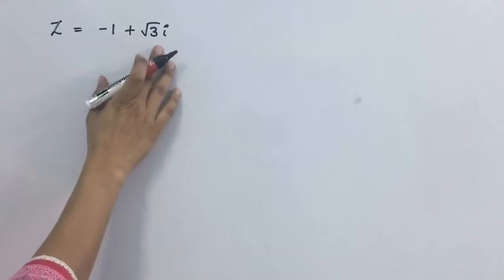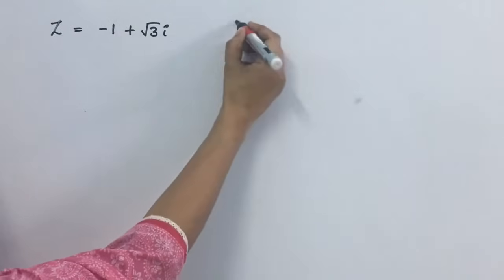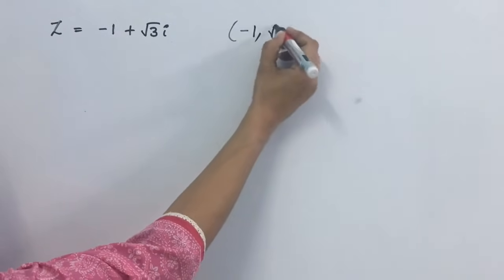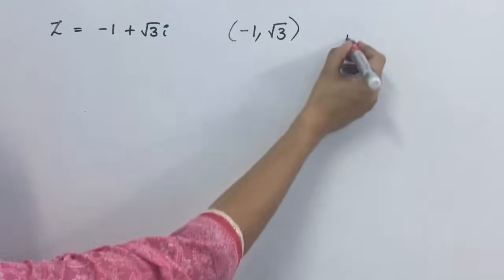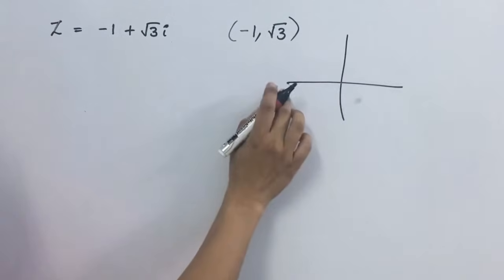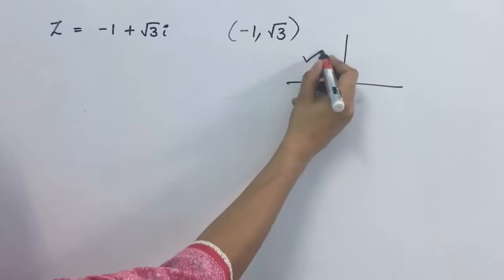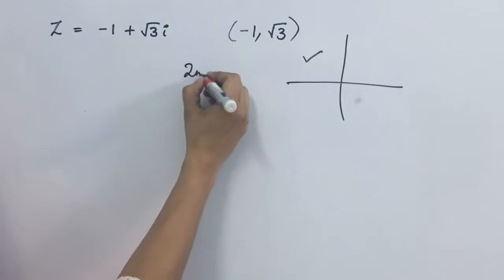Z equal to minus 1 plus root 3i. What are the coordinates? Minus 1 and root 3. So, we will find the value of z. Since x is minus and y plus, it will lie in the second quadrant.